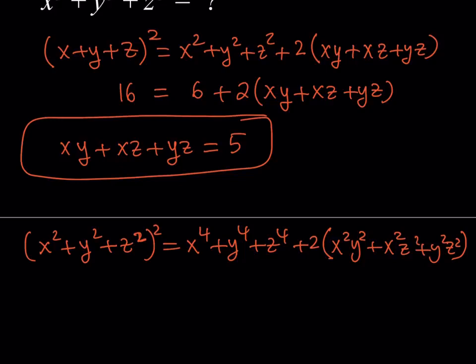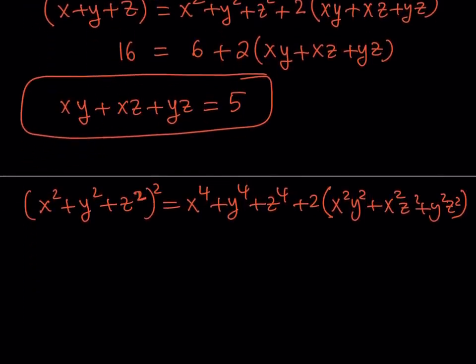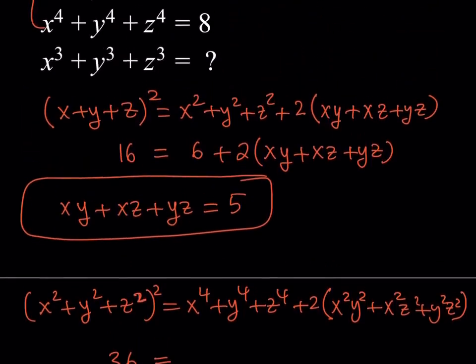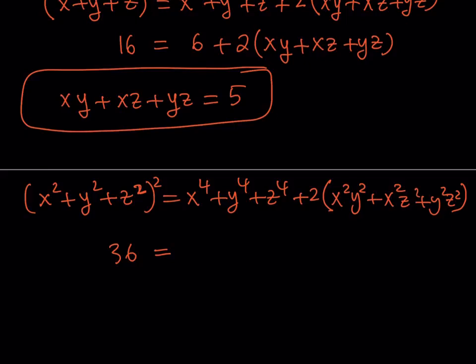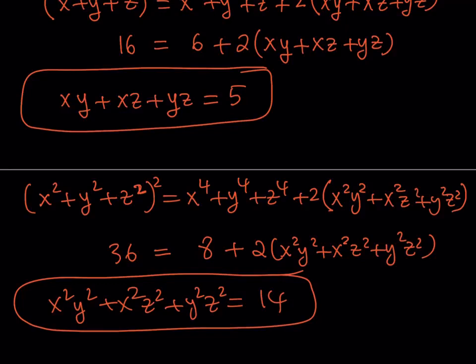Now, one thing to remember here is that we do know the values of x squared plus y squared plus z squared, and it's given as six. So six squared is going to be 36. Do we know x to the fourth plus y to the fourth plus z to the fourth? Yes, we do. That's going to be eight. So we can isolate this expression. If you subtract 36 minus eight, that's 28 divided by two, you're going to get 14. This is another useful expression for us.